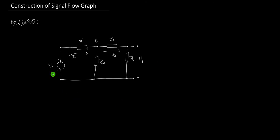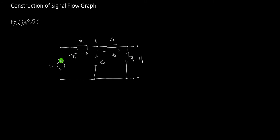To illustrate the steps we can follow, let's take a look at this example. We have a circuit with voltages V1, V2, and V3. The variables are V1, V2, V3, and also I1 and I2 — so there are five variables.